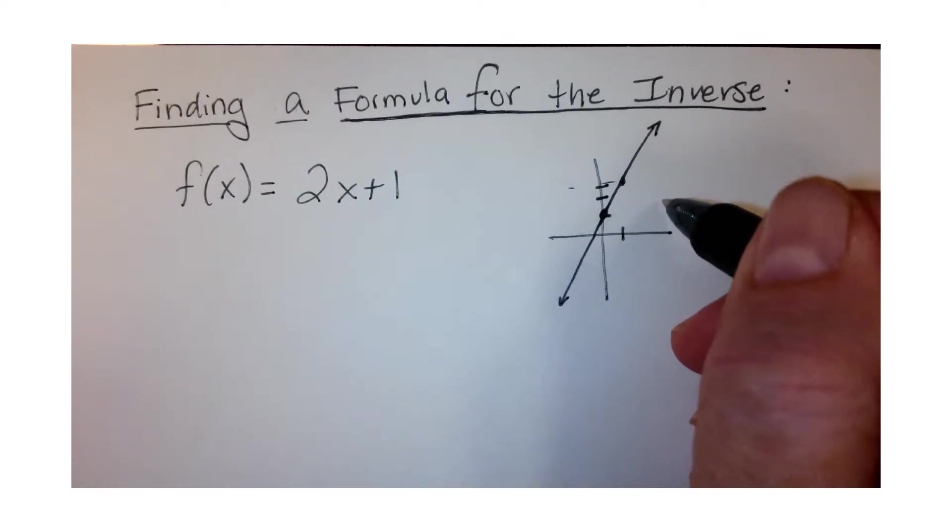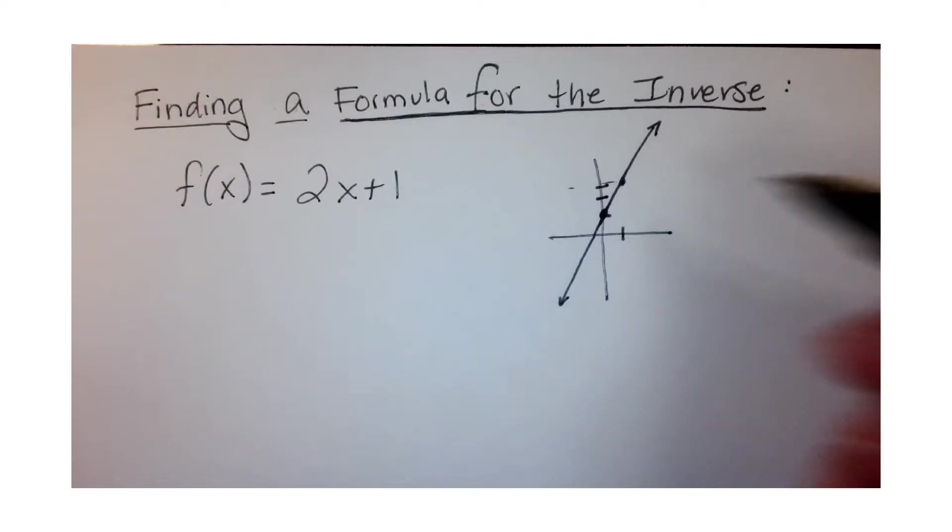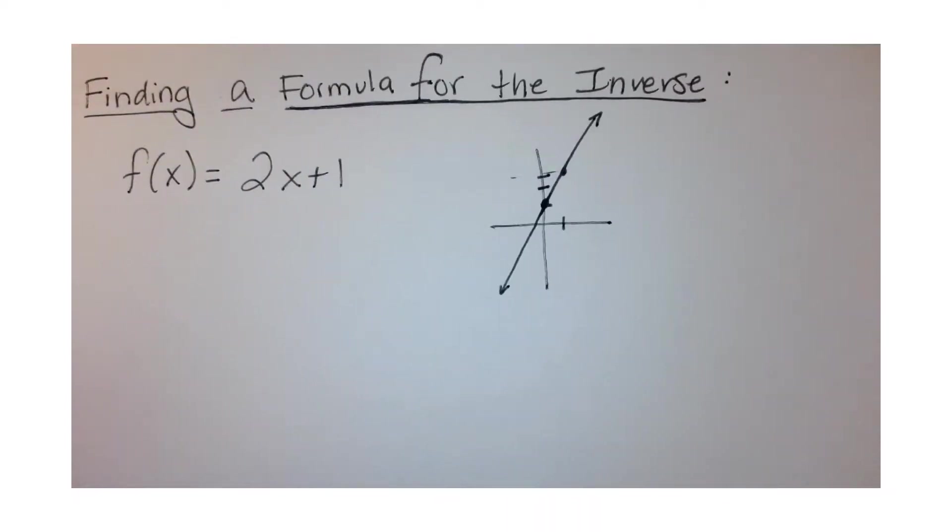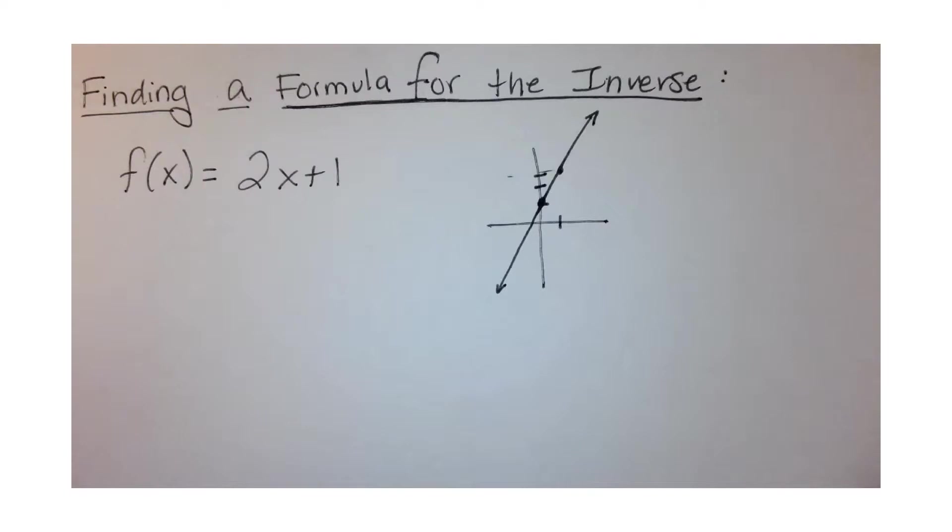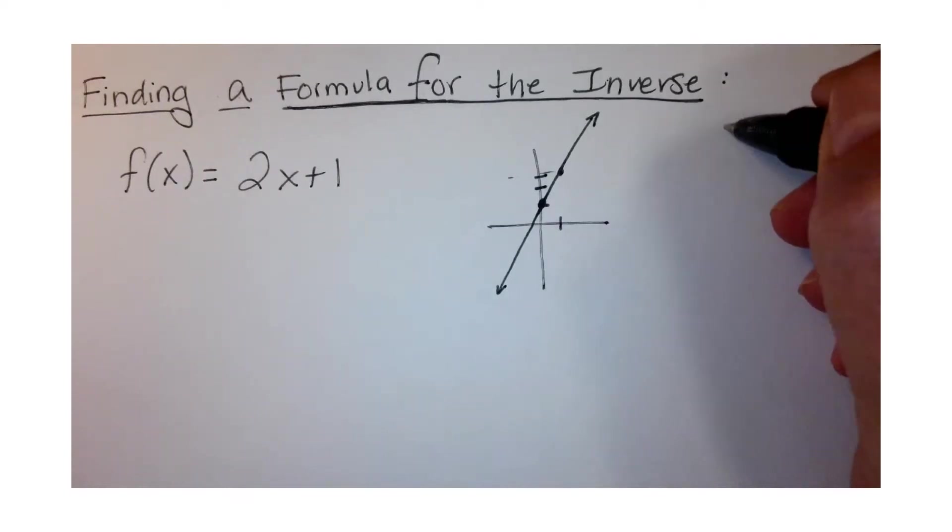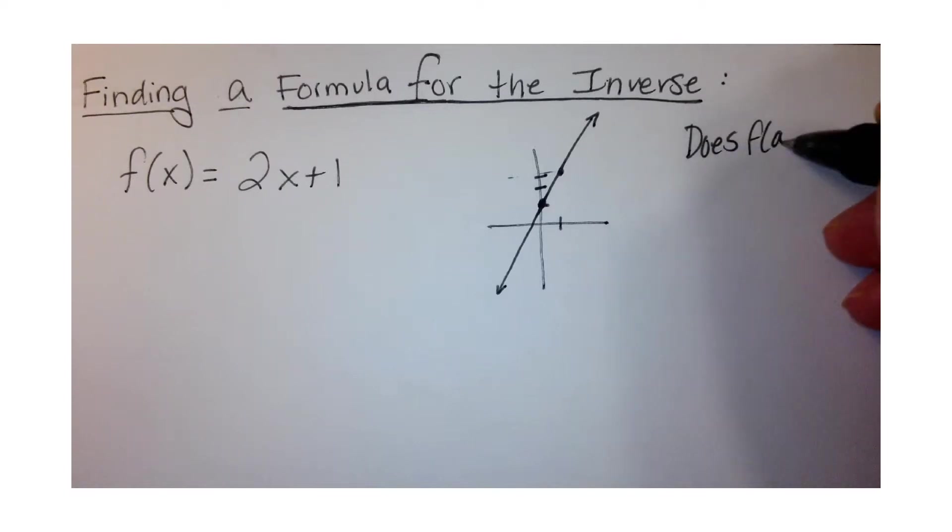The other way to check for one-to-one is to do it algebraically. So we're going to check: does f(a) equal f(b) result in a equals b?